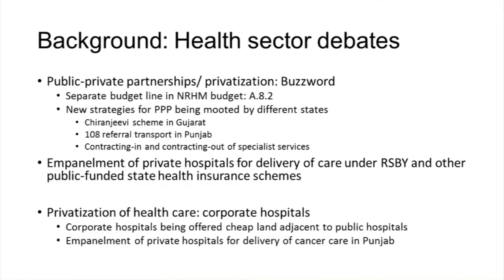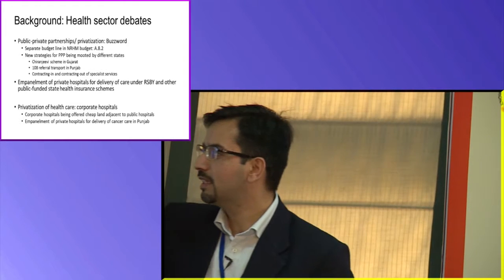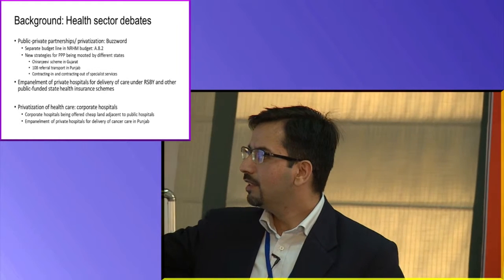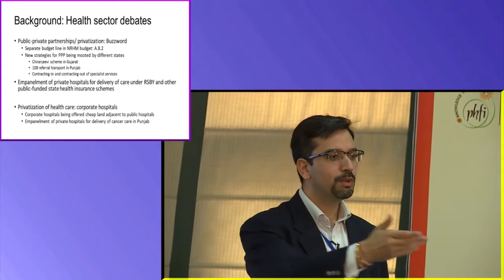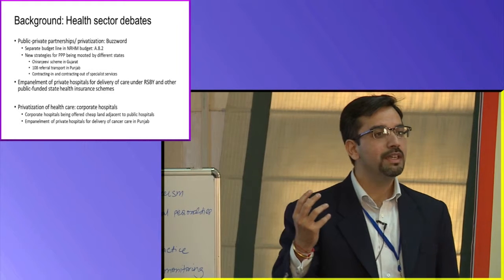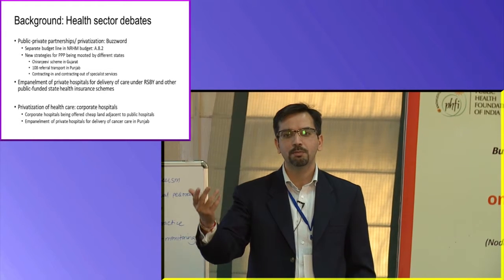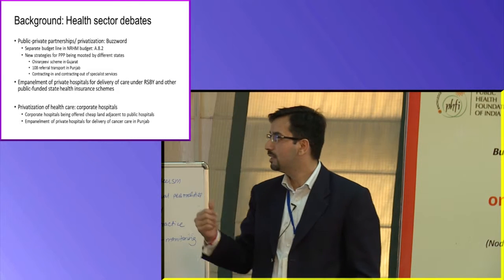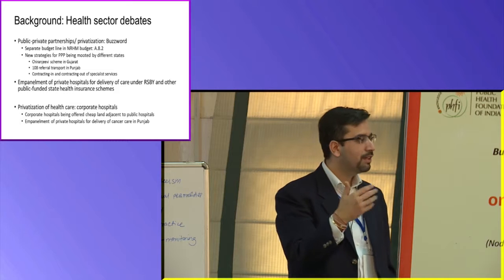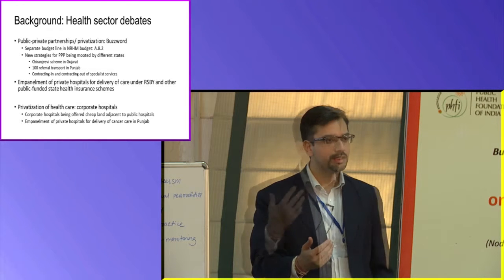If you look at NRHM, there is a separate line item — A.8.2 — specifically asking how much budget to allocate to PPPs, explicitly involving the private sector. There are so many state-specific schemes going on. There was a Chiranjeevi scheme in Gujarat having the private sector provide delivery services — paying a lump sum rate for a delivery or caesarean section. We have privately provided referral transport services; 108 is a classical example, with different private players operating these schemes and vehicles. There is a lot of debate about contracting in and contracting out of specialist or basic primary care services.